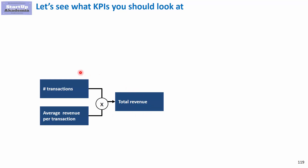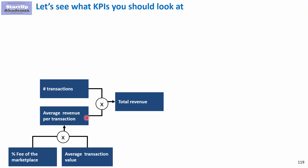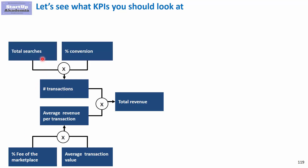When we look at total revenues, it depends on two things: the number of transactions and the average revenue per transaction. The average revenue per transaction depends on the average transaction value — the transaction between the patient and the doctor — and the percentage fee you take as a marketplace. This can range from a few percent, like 2% in the case of Etsy, up to 50 or even 75%, like in the case of Udemy.